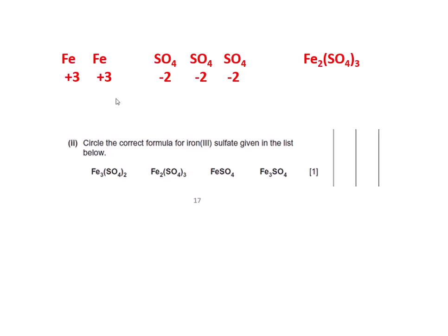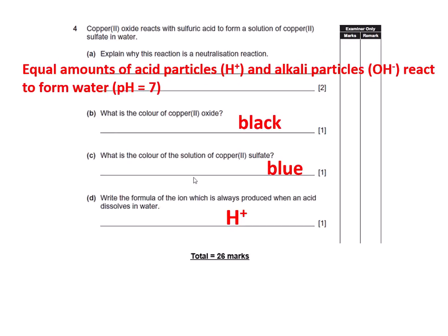Iron(III) sulfate, let's work it out. Iron(III) means Fe³⁺, sulfate SO4²⁻. So to balance it up we need 2 irons to give us +6, 3 sulfates to give us -6, so Fe2(SO4)3. This one here will be the correct answer.